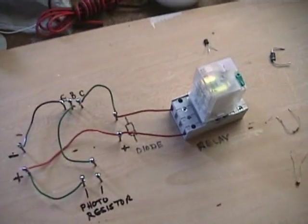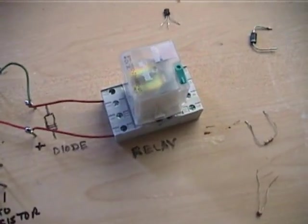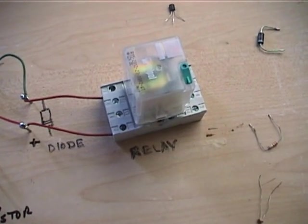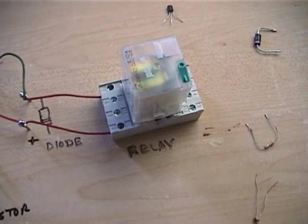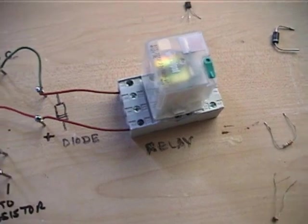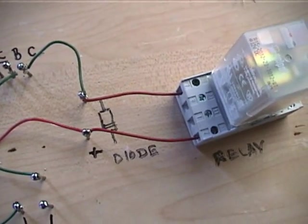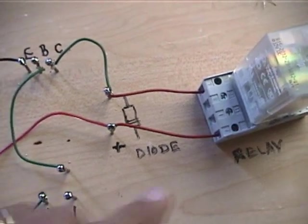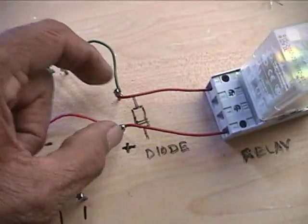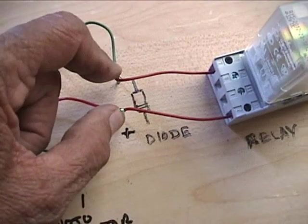And I have here the relay. This is a different kind of relay, but anyway it works the same. Then from the coil of the relay, the wires go here and here to this couple of nails.